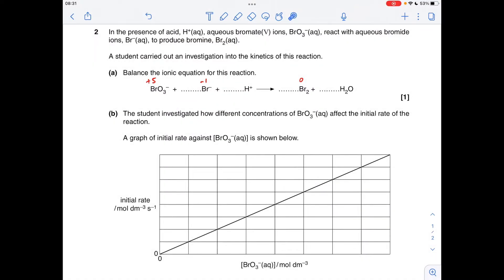Okay, so balancing the ionic equation to start with. You'll notice I've got these red numbers above the bromine species—they're the oxidation numbers of the bromine in each of those. What we're going to need to do is use the oxidation number change to balance, or to start balancing, the equation.